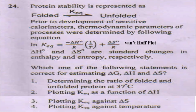The next question involves protein stability measured as folded or unfolded structures, where Keq is the equilibrium constant. Prior to the development of sensitive calorimeters, thermodynamic parameters were determined by the Van't Hoff equation. We can plot a graph of log Keq against 1/T — the slope gives the value of −ΔH/R. So by plotting a graph between log Keq and 1/T, we can calculate the values of ΔH and ΔS. The answer will be number four.